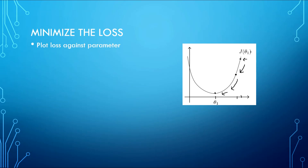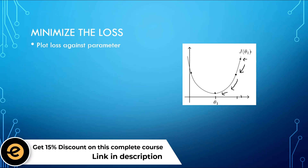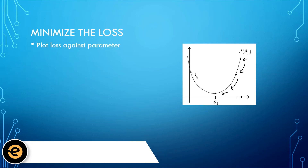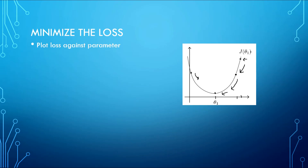We could have also started from a value of theta_1 on the other side of the curve. In that case, we would update the value of theta_1 in the opposite direction until we find the optimum value of theta_1 which gives us the minimum loss. So, we minimize the loss by finding the optimal value of our parameters — we change our parameters to reach the minimum loss.